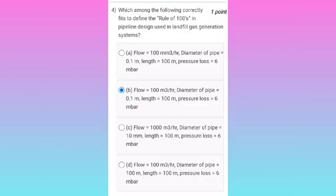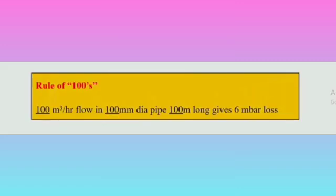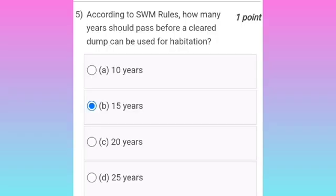Fourth one: which among the following correctly fits to define the rule of hundreds in pipeline design used in landfill gas generation systems? For the fourth question, it is option B — the rule of hundreds is 100 cubic meters per hour flow in a 100 mm diameter pipe.